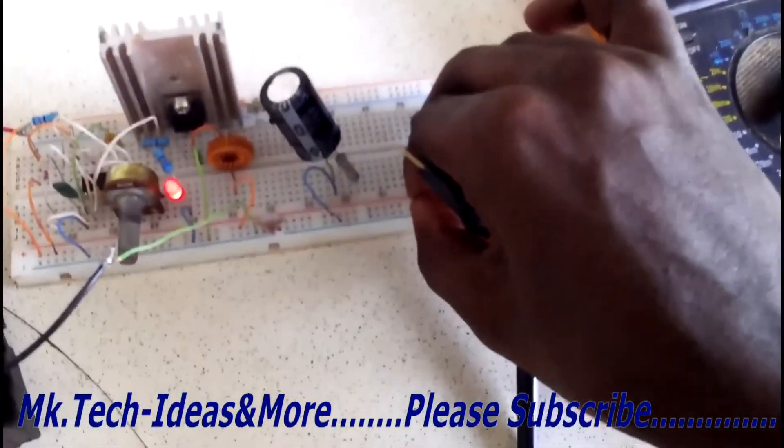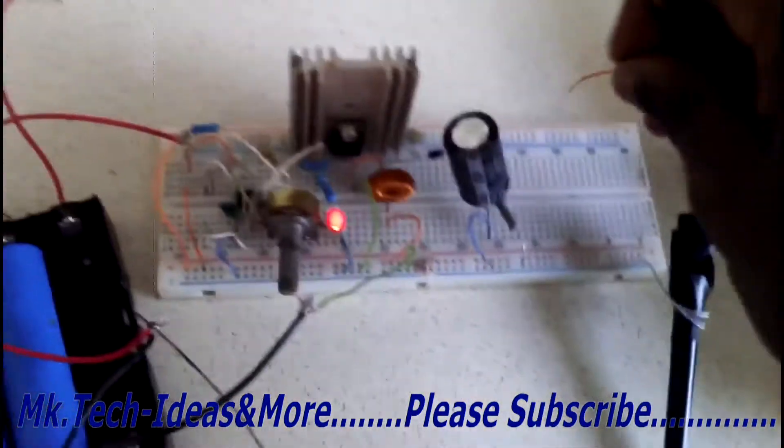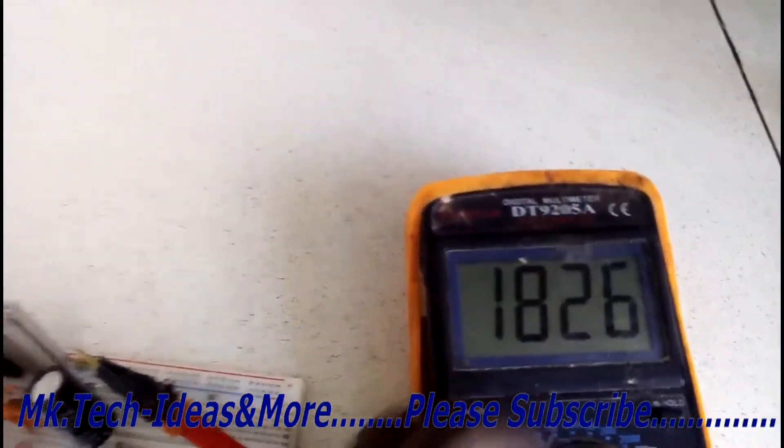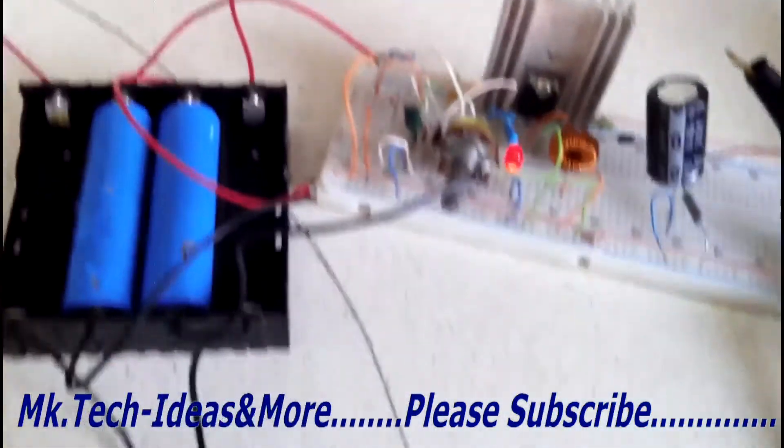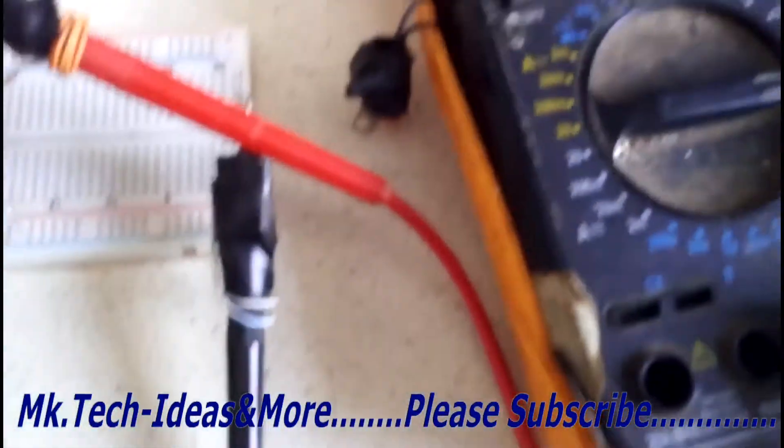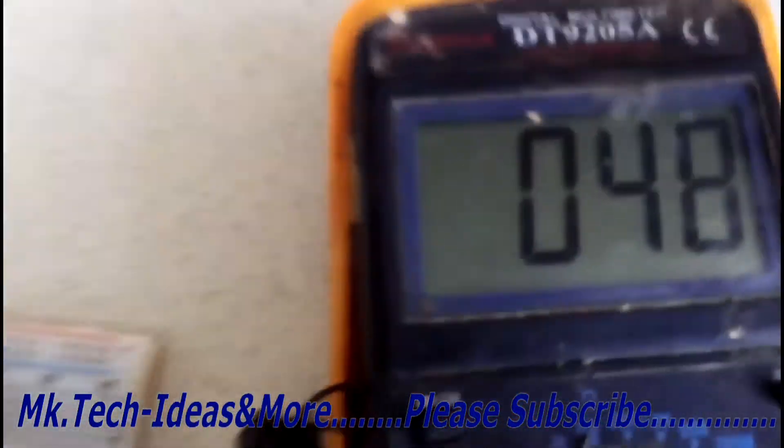The voltage from the step-up converter. I forgot to mention that the high frequency diode I'm using is a UF4007 diode. It's rated for 1 amp and 1000 volts. As you can see, immediately at the lowest duty cycle, the output voltage is 48 volts.